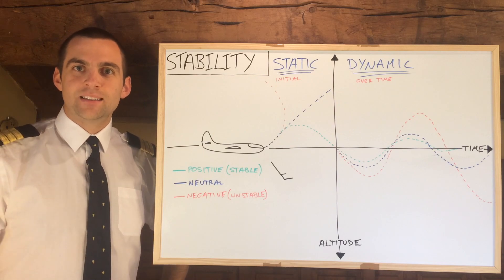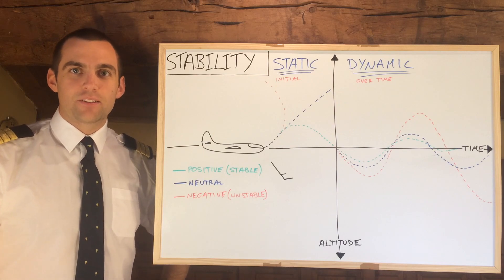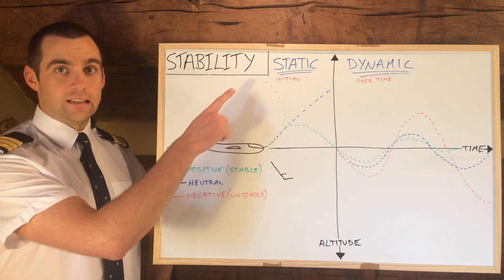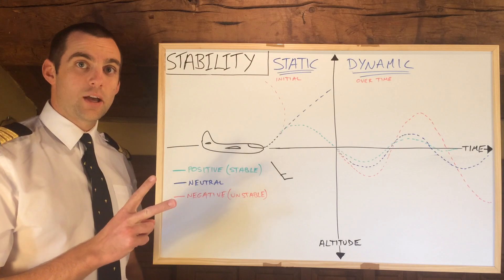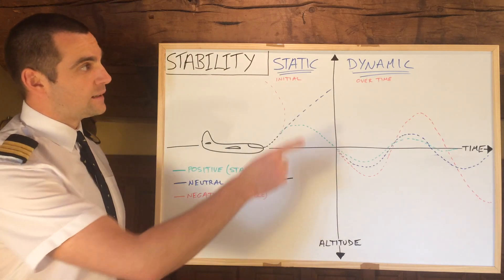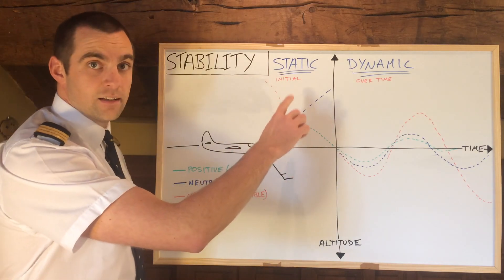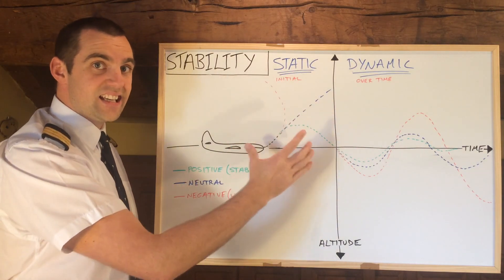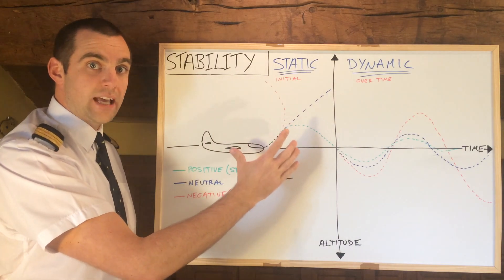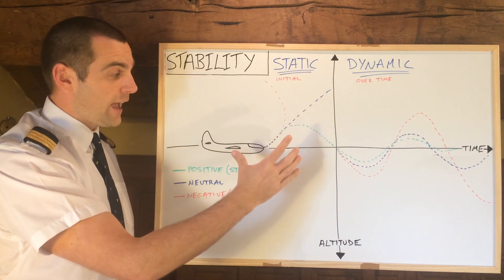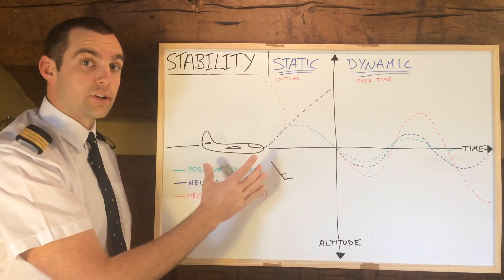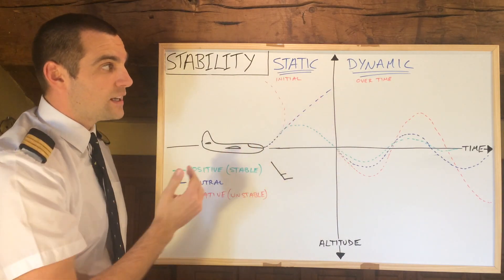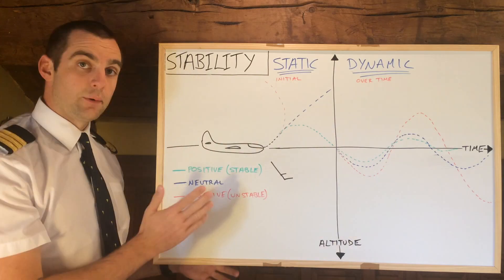Hey guys and welcome! Today on ATPL Theory we're going to be talking about stability. There are two types of stability: static and dynamic. Static is the initial tendency of the aircraft after an upset, and dynamic is what it does over time.